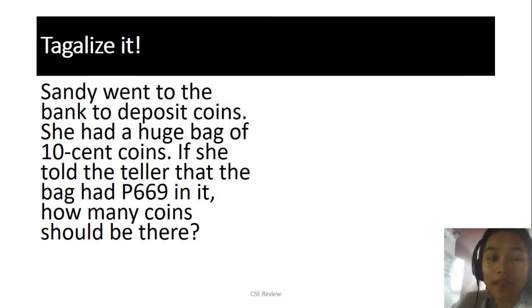Again, this appeared in the exam. It says Sandy went to the bank to deposit coins. She had a huge bag of 10-cent coins. If she told the teller that the bag had 669 pesos in it, how many coins should be there? Now, teachers used to tell us to write down what's given. So you have 669, and then you have 10 cents which is 0.10. And then you need to know how many coins should be there—that's what we're looking for.